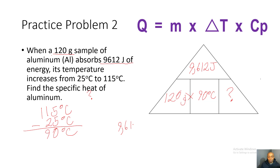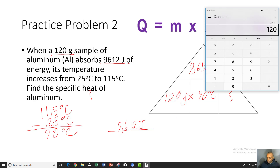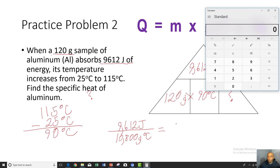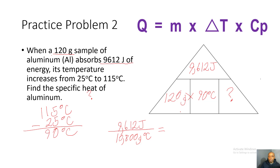The formula gives us 9,612 joules divided by (120 times 90). Using the calculator: 120 times 90 equals 10,800 grams degrees Celsius. Then 9,612 divided by 10,800 gives a specific heat of 0.89 joules per grams degrees Celsius.